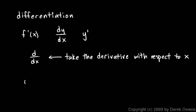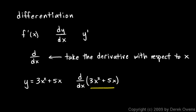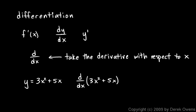Sometimes this symbol is used as an operator. For example, if your function was y equals 3x squared plus 5x, then you could refer to the derivative like this: d by dx of 3x squared plus 5x. This means take the derivative of what comes after it. You've seen notation similar to this in trigonometry — for example, sine of x plus pi over 2 means take the sine of the expression in parentheses. Similarly, here we think of differentiation as something getting done to the function.